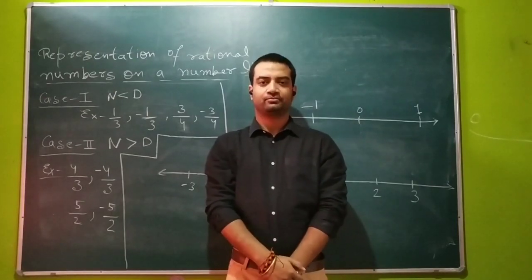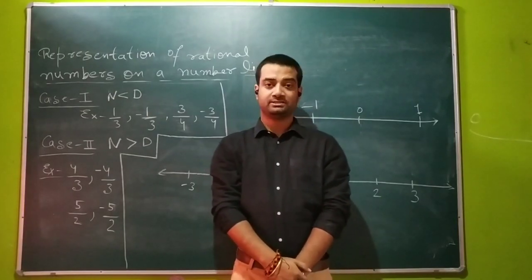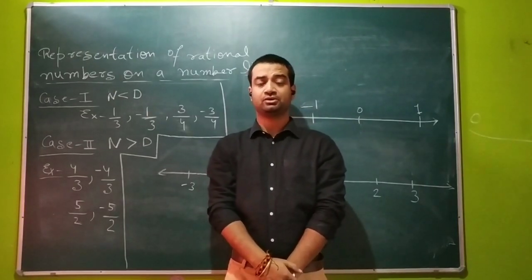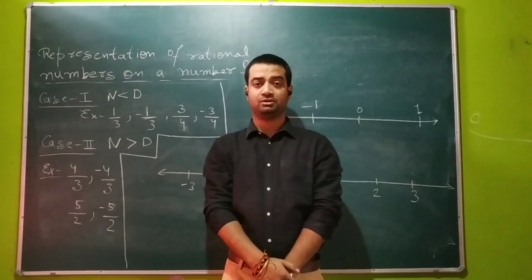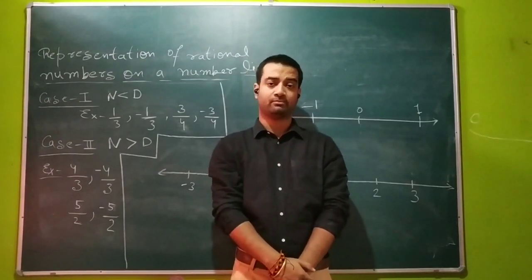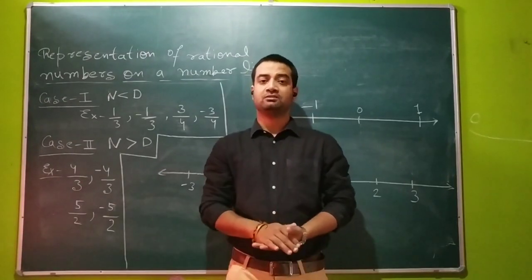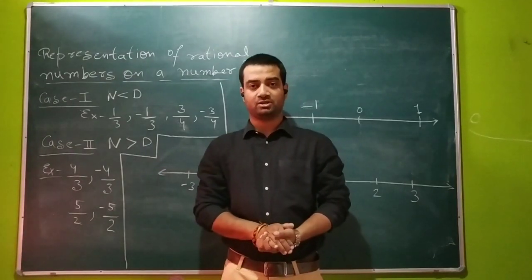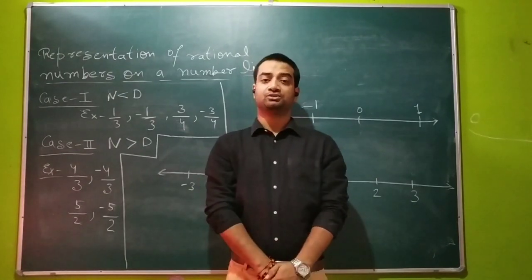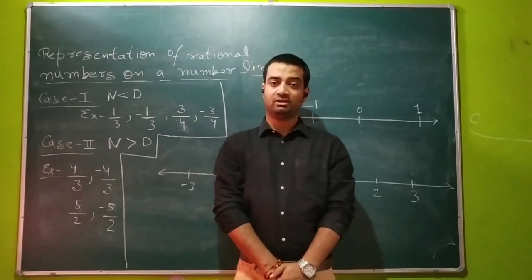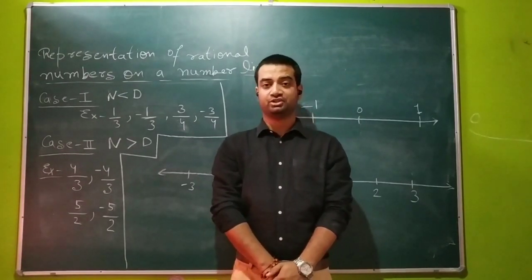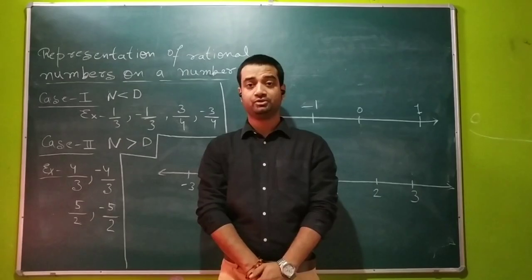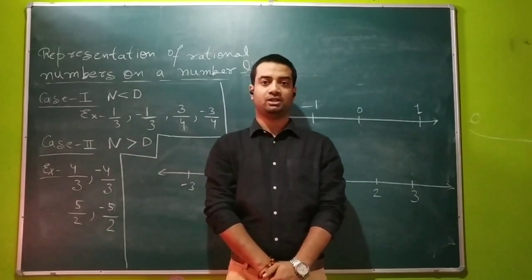Jai Him children! Our today's topic is to represent rational numbers on a number line. When it is about representing integers on a number line, it is very easy. But how can we represent a rational number like minus 4 upon 3 on the number line?